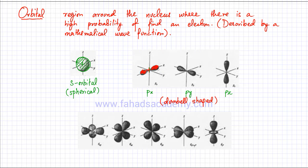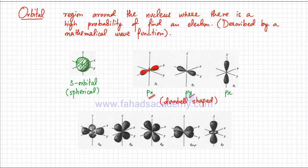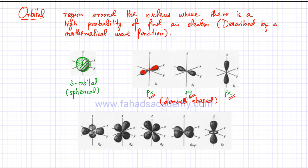Since the P-orbital has a specific orientation, Px means the two lobes are lying on the x-axis — one on the right side of the nucleus and one on the left. If the electron is in the Py orbital, it's again a dumbbell-shaped region around the nucleus, but this time lying on the y-axis. Similarly, if an electron is in the Pz orbital, it's a dumbbell-shaped region with two lobes lying on the z-axis. So the P-orbital comes in three versions — Px, Py, and Pz — with three different orientations.